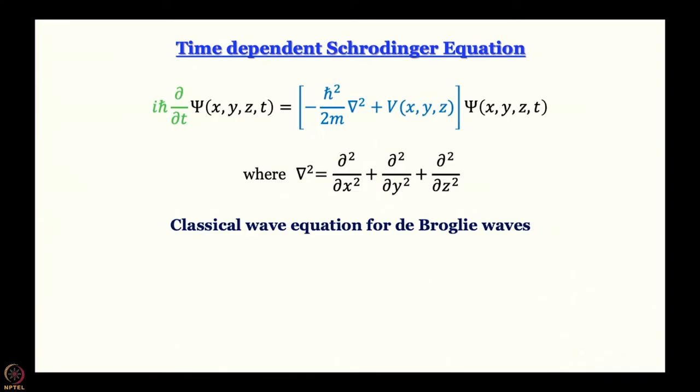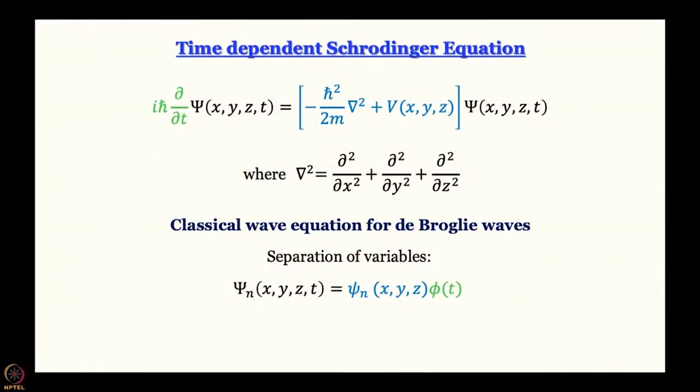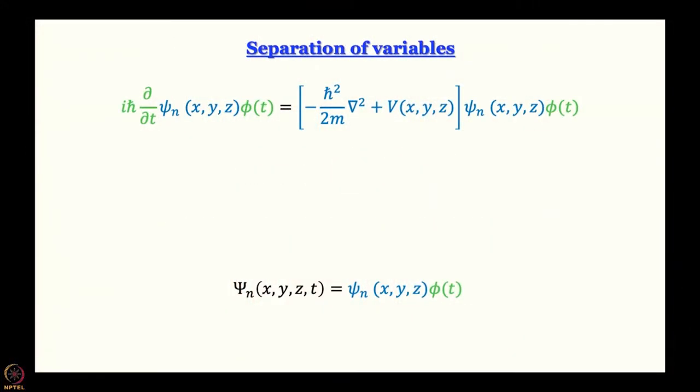The way to handle this classical wave equation for de Broglie waves, which is a mixture of spatial and temporal coordinates, is to express the wave function as a product of a space-dependent part and a time-dependent part, and hence use the technique of separation of variables, which is quite well known in differential equations. When we plug in this value of the wave function into the time-dependent wave equation, the space-dependent part is written in blue and the time-dependent part is written in green.